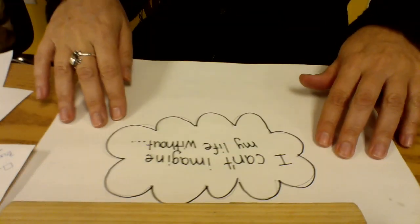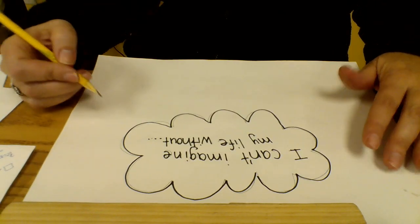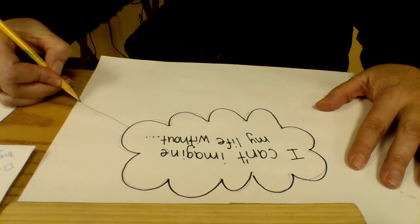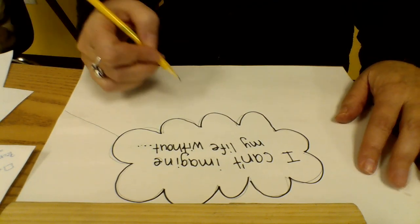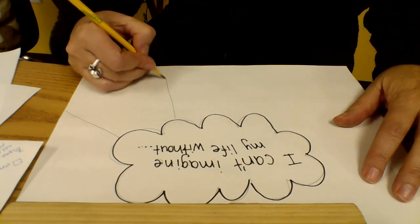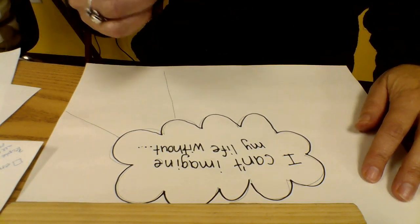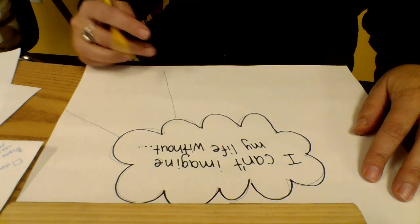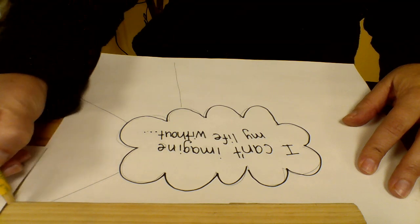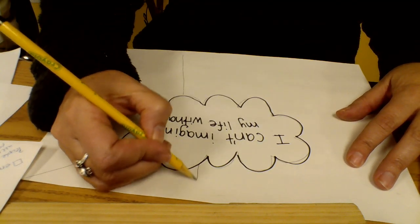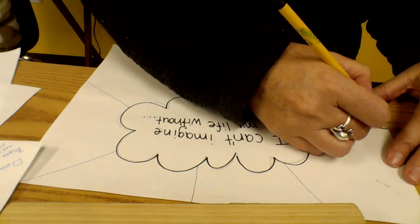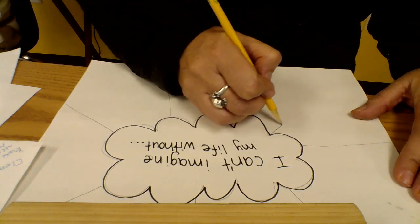I'm always starting with a pencil so in case I make any mistakes that I don't like, I can fix them. I'm going to put a straight line here and then another straight line here. I'm having a hard time going all the way to the edge of my paper because the table stops me. A straight line here, a straight line here, here, here.